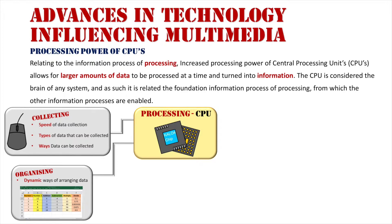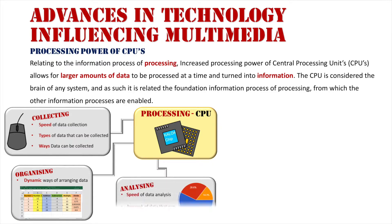Moving on to analyzing — essentially the speed that data is analyzed. The smarter our processor is, the faster data can be analyzed. And then obviously the amount of data that can be analyzed at a time — that's the multi-processing factor of our actual CPU.